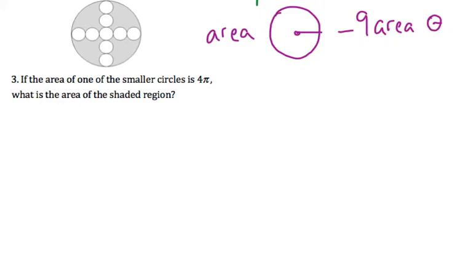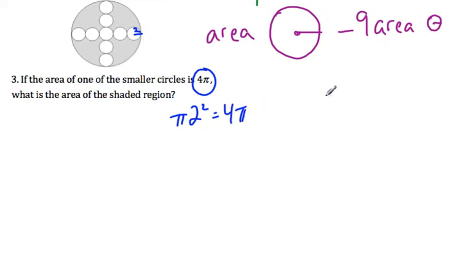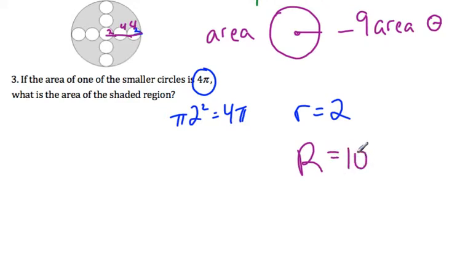The key idea is realizing that if the area of one of the smaller circles is 4 pi, then the radius is equal to 2, because pi times 2 squared is 4 pi. Call that the little r. If the little radius is 2, then the diameter is 4, and another diameter is 4, plus another radius of 2, so the big radius equals 10.